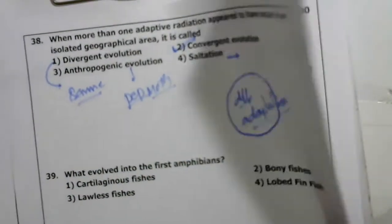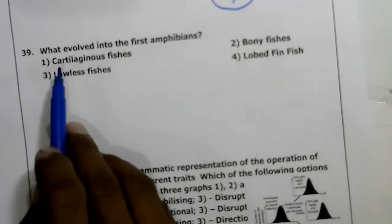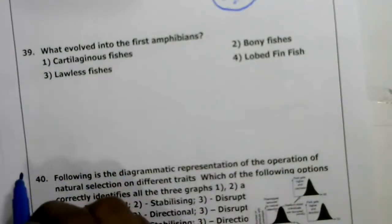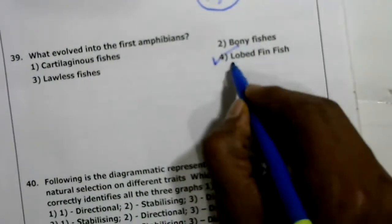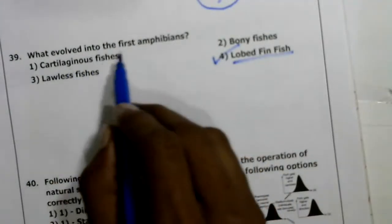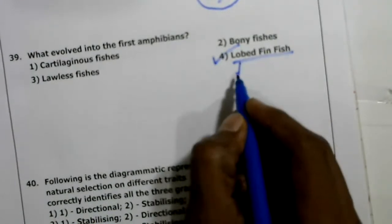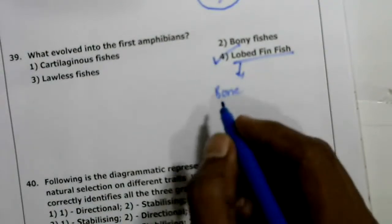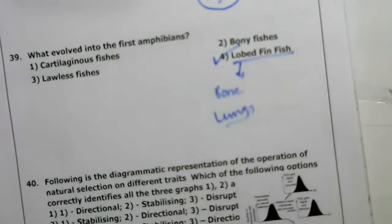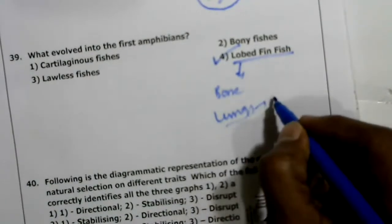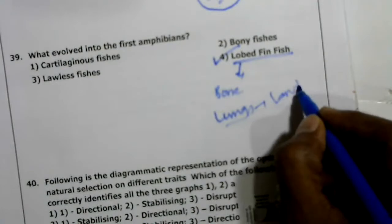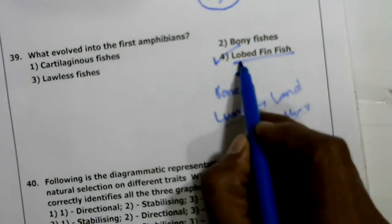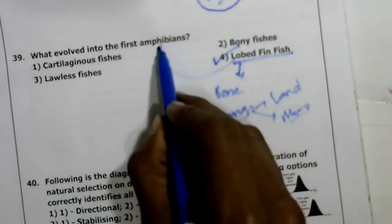Thirty-ninth question: what evolved into the first amphibians? Lobe-finned fish evolved into first amphibians because their limbs were bony and they had lungs, enabling them to live on land or in moist places. Lobe-finned fish evolved into the first amphibians.